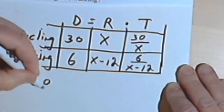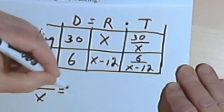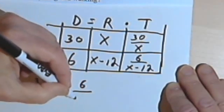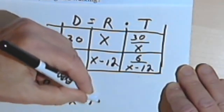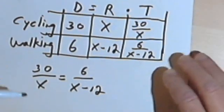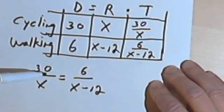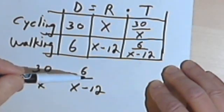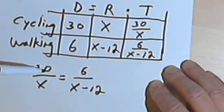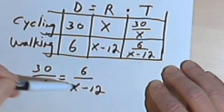So it's 30 over x equals 6 over x minus 12. And now I've got an equation. On each side is just a fraction. If I have an equation with nothing but fractions, one fraction on the left, one fraction on the right, I can cross-multiply.